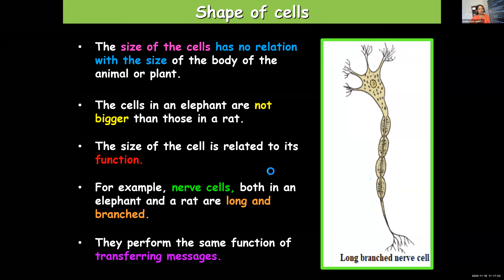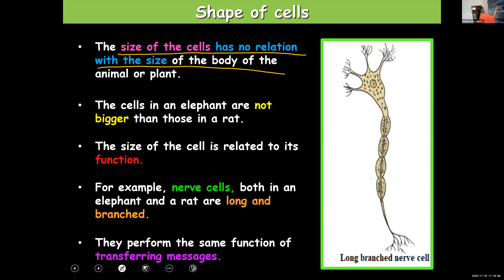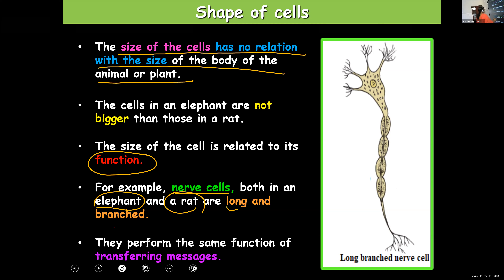Very important point to note: there is no connection between the size of the cells and the size of the organism. The size of the cells is always related to the function they have to perform, and the number of cells can definitely vary between a large and a small organism.